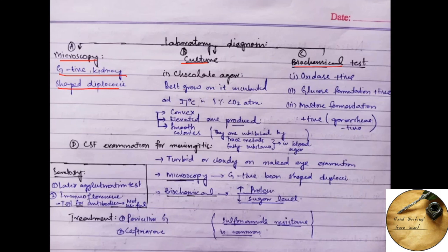In culture we use the chocolate agar. We can't use the blood agar because the trace metal and fatty substances in the blood agar inhibit the growth of Neisseria meningitidis. So we use chocolate agar. Neisseria meningitidis best grow on it.